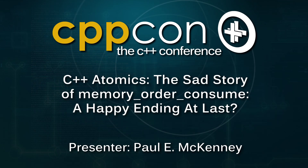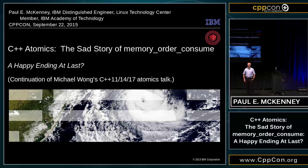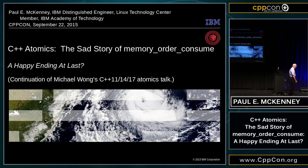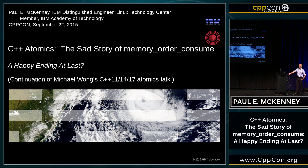This is kind of the third of a set. We had Fedor talking yesterday about how to do atomics, especially on older compilers, which is an impressive feat these days. We had Michael talking about atomics in general, the various memory orders, and so I'm coming, drilling down into the bottom of the depths with memory_order_consume, which has been sort of a sad story. There's a few people that have been involved with it through its whole life, but maybe we're coming in sight of a happy ending.